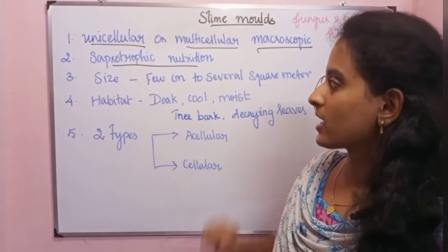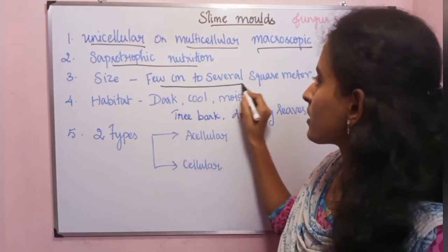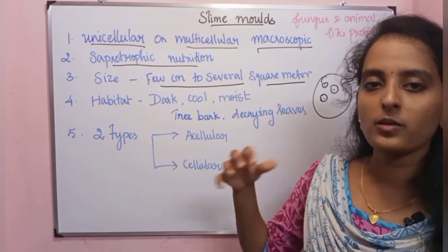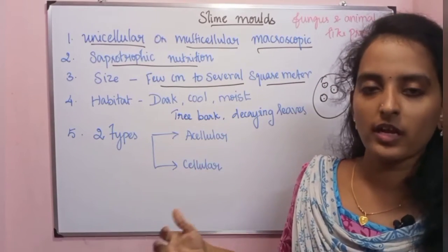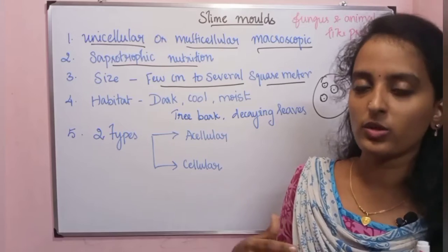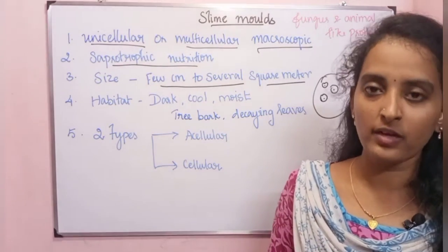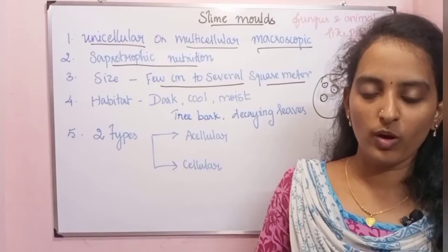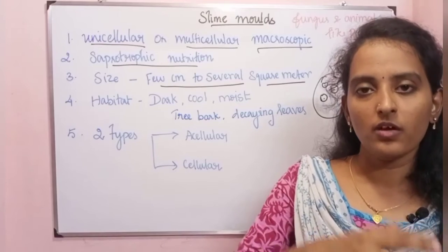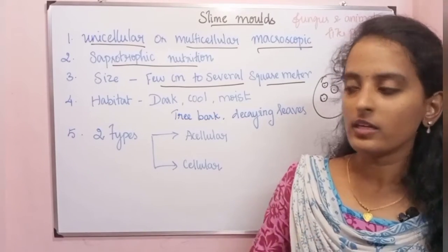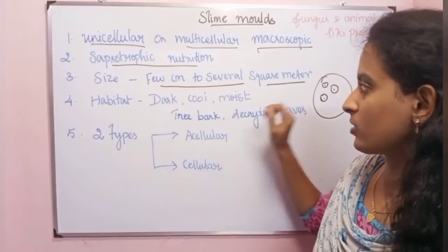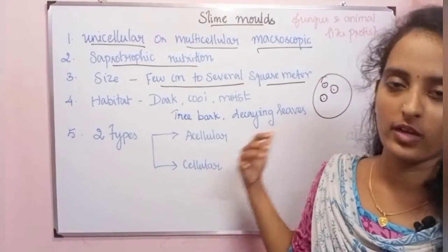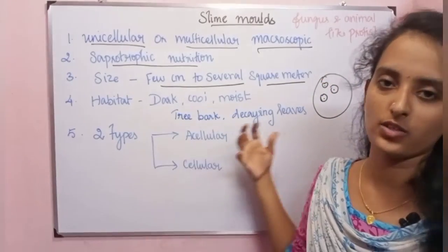The third characteristic is size variation — slime molds can range from a few centimeters to several square meters in size.